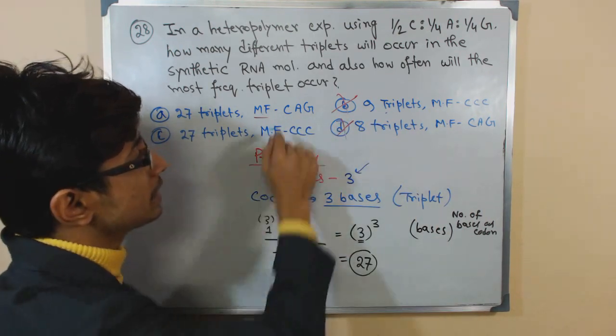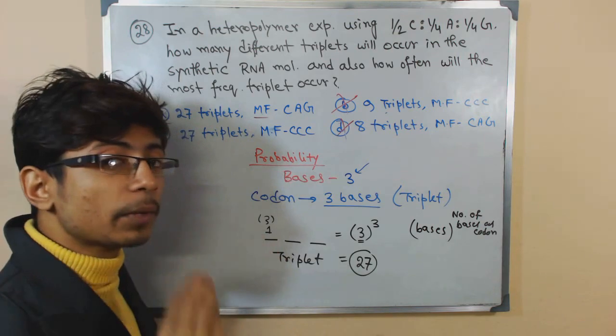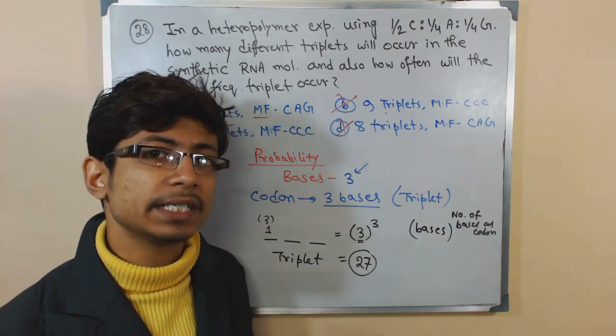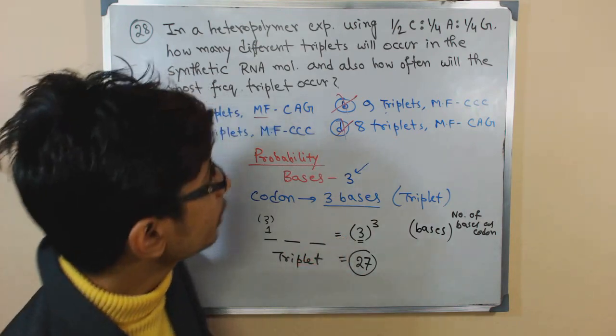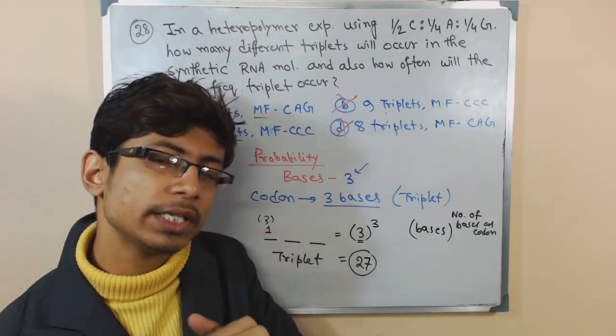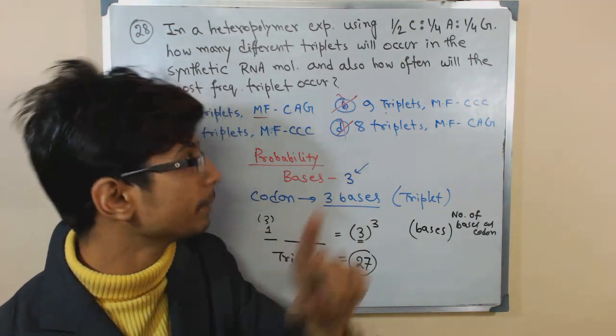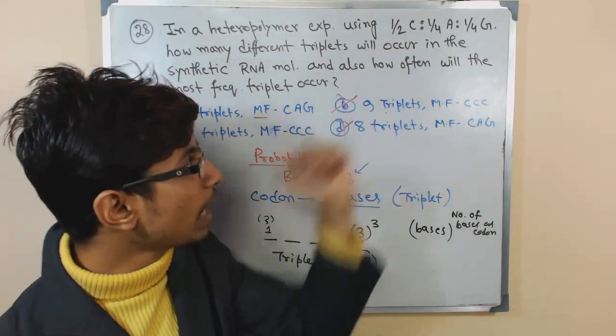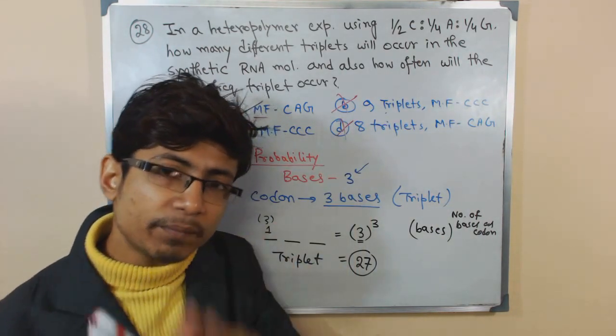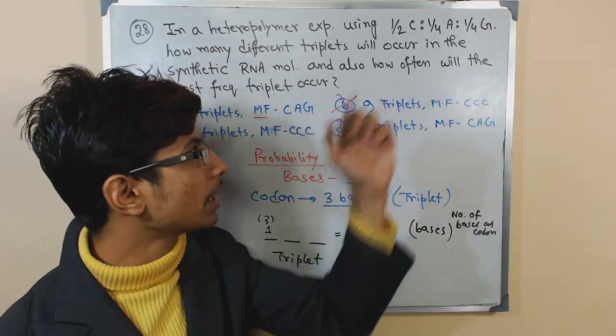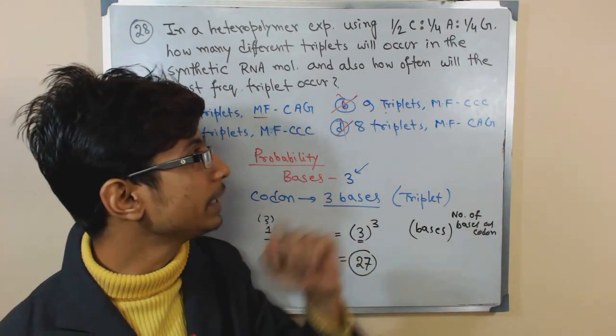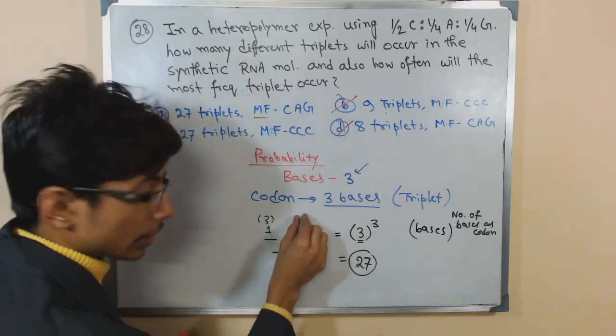To understand that, what we need to know is the prevalence of the base that is present in our experiment. If you look here, we took half, so if four is the total number of bases, among them two will be C, one will be A, and one will be G. That means 50 percent of the bases are C, and the rest 25 and 25 will be A and G.